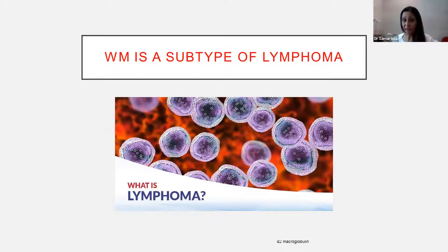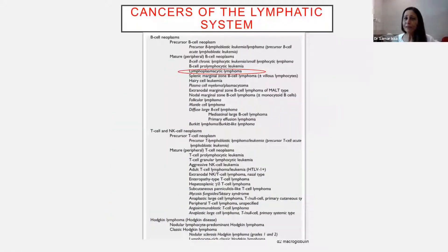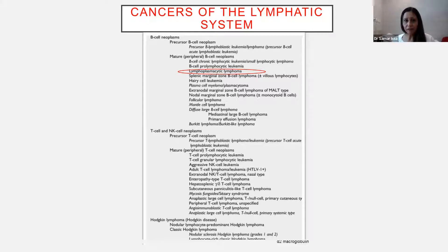Waldenström's macroglobulinemia is a subtype of lymphoma — these are the Waldenström cells with all the IgM vacuoles inside them. Lymphoma is cancer of the lymphatic system. This is the WHO classification of all the subtypes of lymphoma, including B-cell lymphomas, T-cell lymphomas, and Hodgkin lymphoma. There are aggressive subtypes and indolent or low-grade lymphomas. Waldenström's macroglobulinemia, also known as lymphoplasmacytic lymphoma, is a subtype of the mature or indolent B-cell neoplasm.